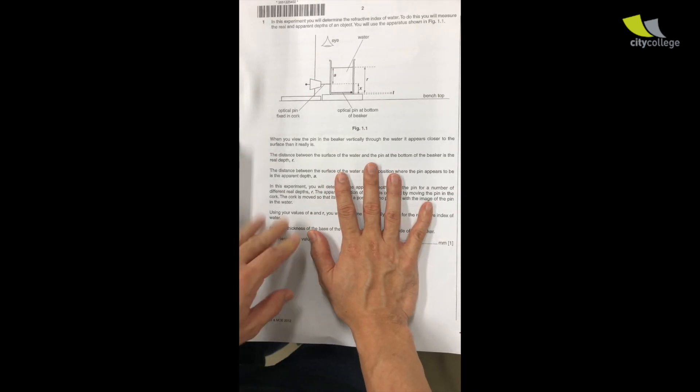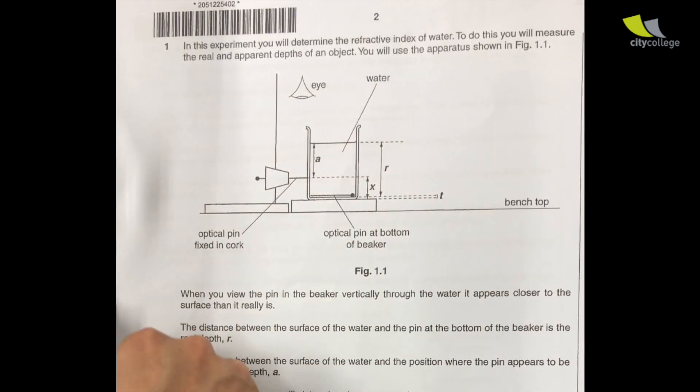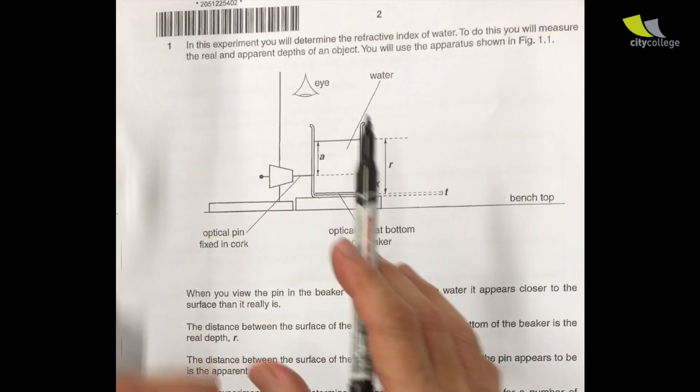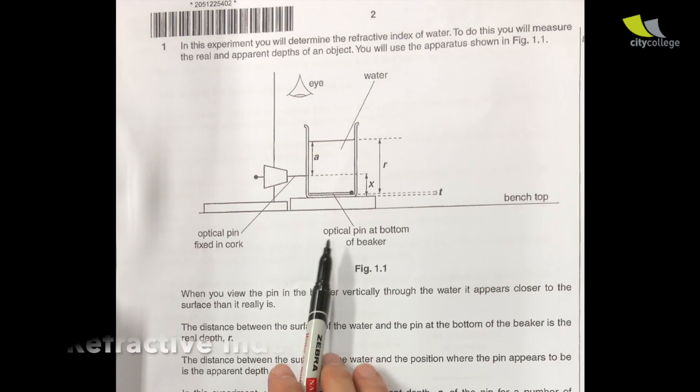Okay, so this is the 2012 paper, it's one of the most challenging papers in terms of light. So this is the setup. The purpose is to find the real depth and apparent depth. The variable, the concept that is involved is actually refractive index.